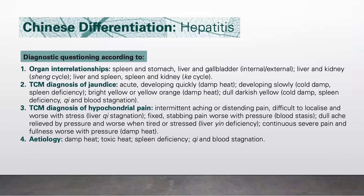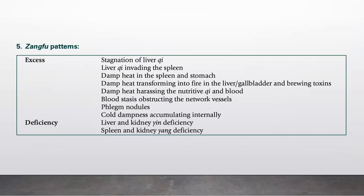On etiology, hepatitis can be due to damp heat, toxic heat, spleen deficiency, or qi and blood stagnation. The zangfu organ patterns in excess include stagnation of liver qi, liver qi invading the spleen, damp heat in the spleen and stomach, damp heat transforming into fire in the liver and gallbladder, brewing toxins, damp heat harassing the nutritive qi and blood, blood stasis obstructing the hepatic vessels, and phlegm-node accumulation. For deficiency patterns, we have liver and kidney deficiency, and spleen and kidney yang deficiency.